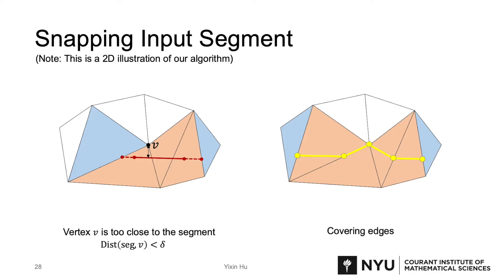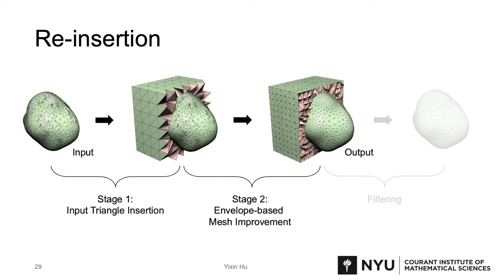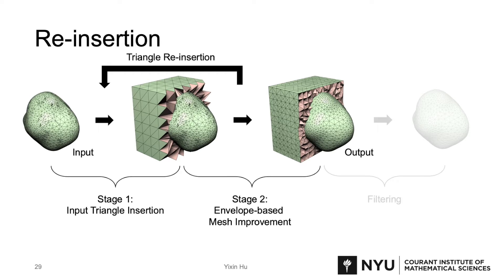Overall, snapping makes it more likely to insert input segments. But even with snapping, it's still possible that some input segments are unable to be inserted. For these segments, we will try to insert them during the next stage, mesh improvement, when the mesh quality gets better and the insertion gets easier. We try to insert them every three iterations of mesh improvement. It's rare that an input segment cannot be inserted in the end — based on our experiment on 10,000 models, this does not happen.